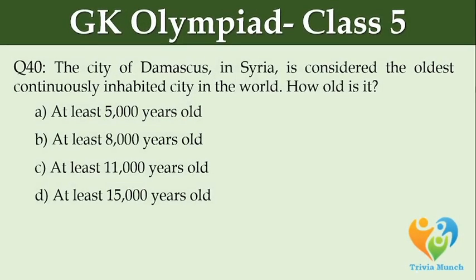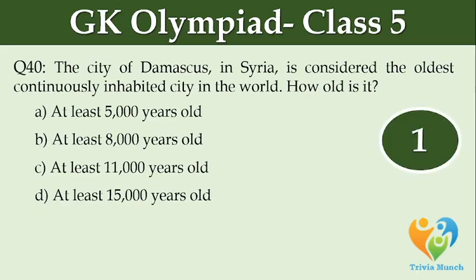The city of Damascus in Syria is considered the oldest continuously inhabited city in the world. How old is it? Option A: At least 5,000 years old. Option B: At least 8,000 years old. Option C: At least 11,000 years old. Option D: At least 15,000 years old.